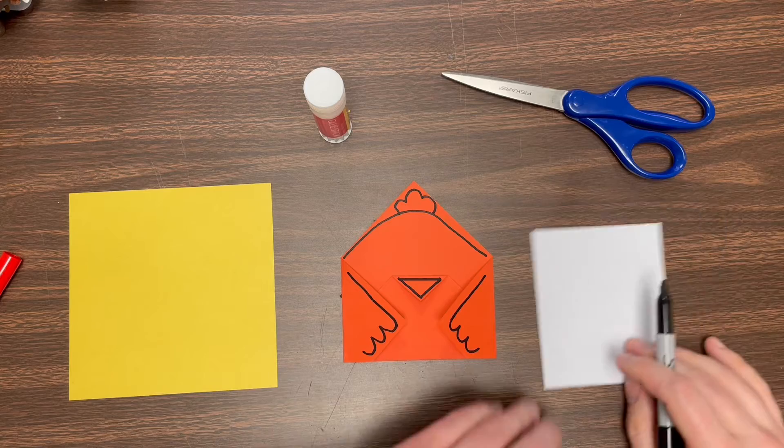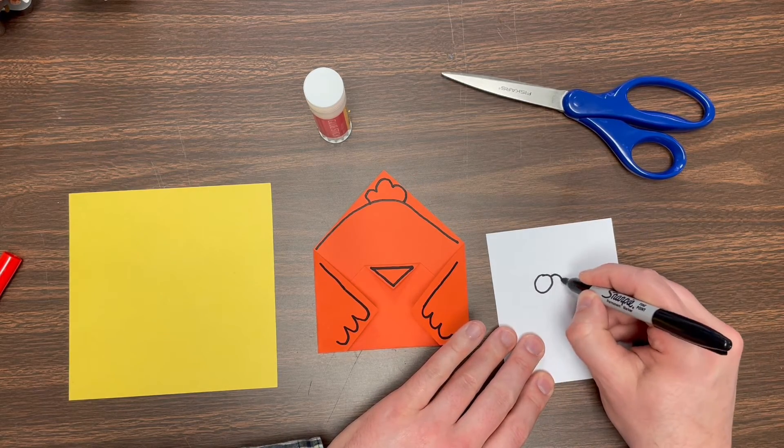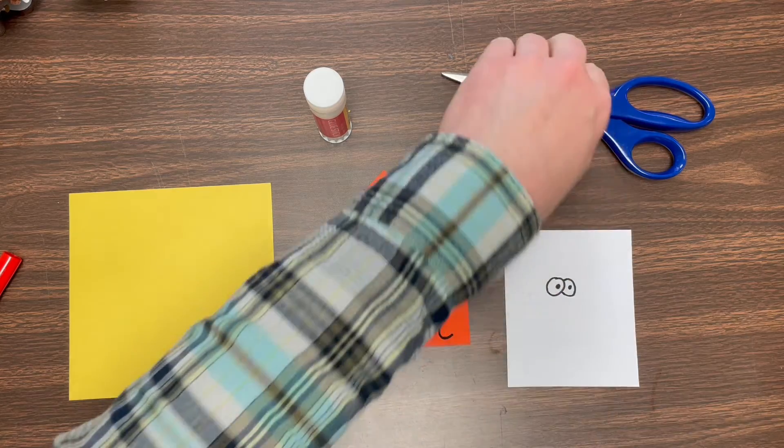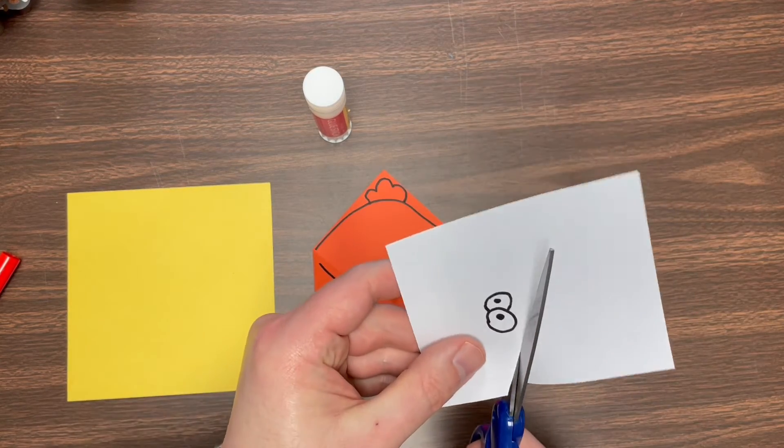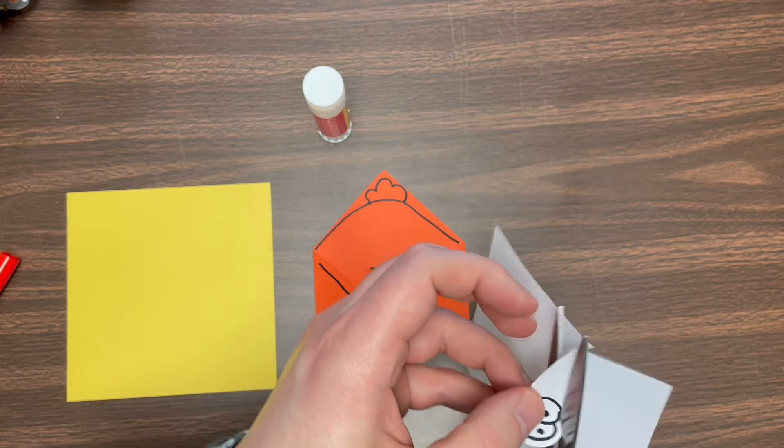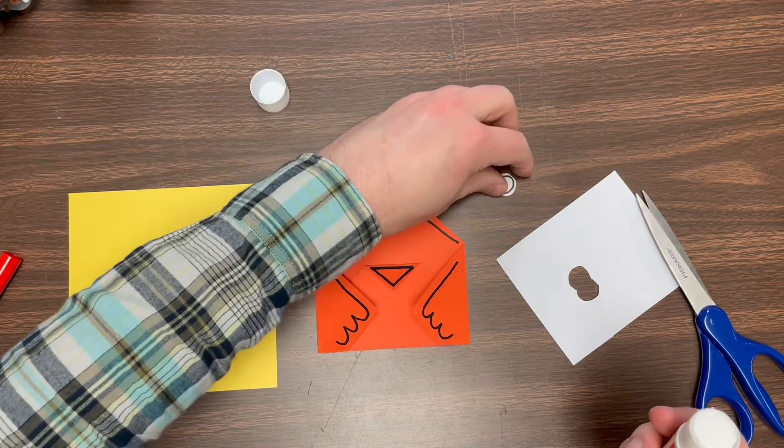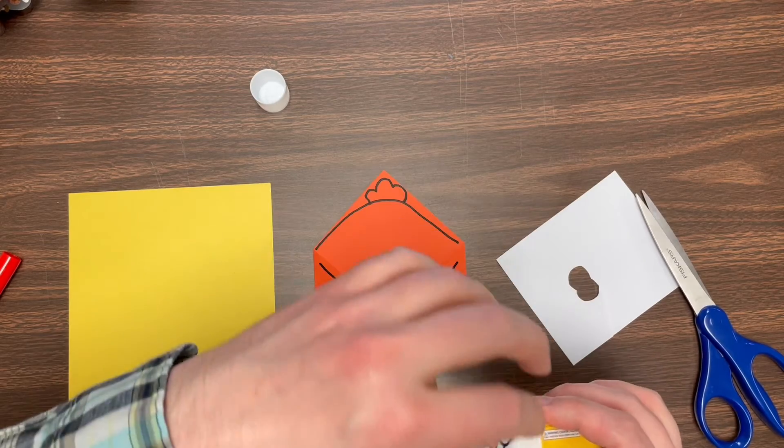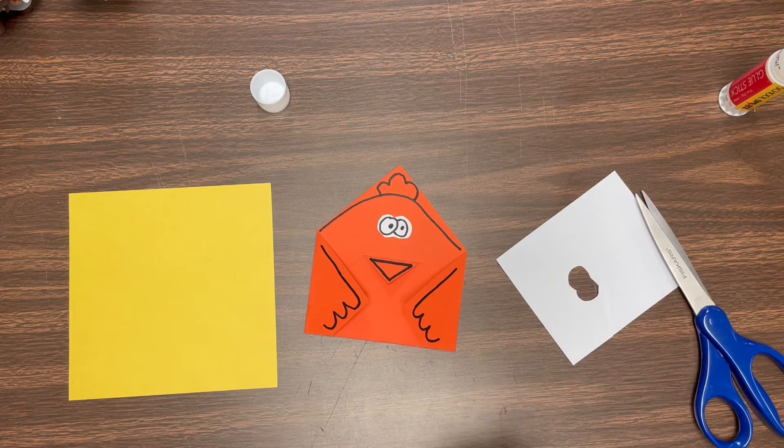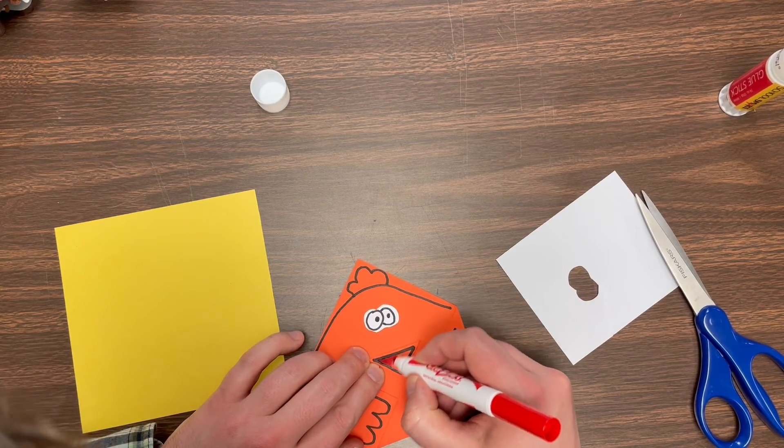Now for the eyes, you could just draw the eyes on, but I am going to draw them on white paper and cut them out. So I think they'll stand out a little bit better. So I'm going to cut these out. And I'm not going to cut right on the line. I'm going to cut around it. And I'm going to use my little glue stick. Put those on there. Now I'm going to color in my beak and the little feathers up at the top. Make those red. Make those stand out too.